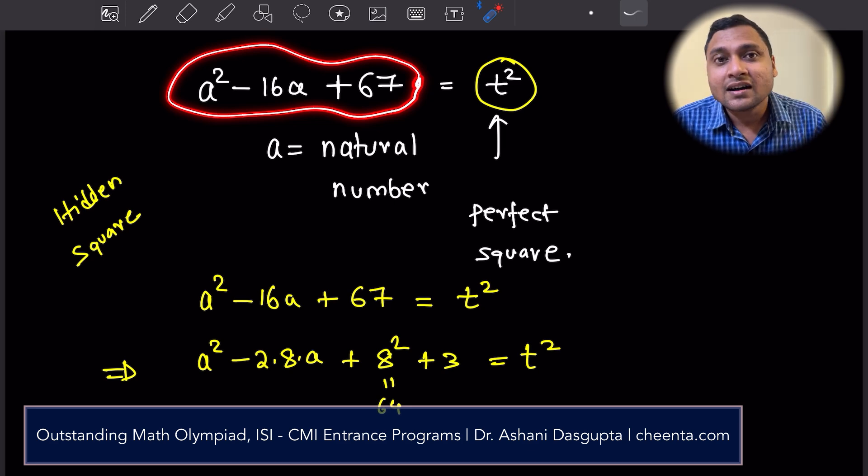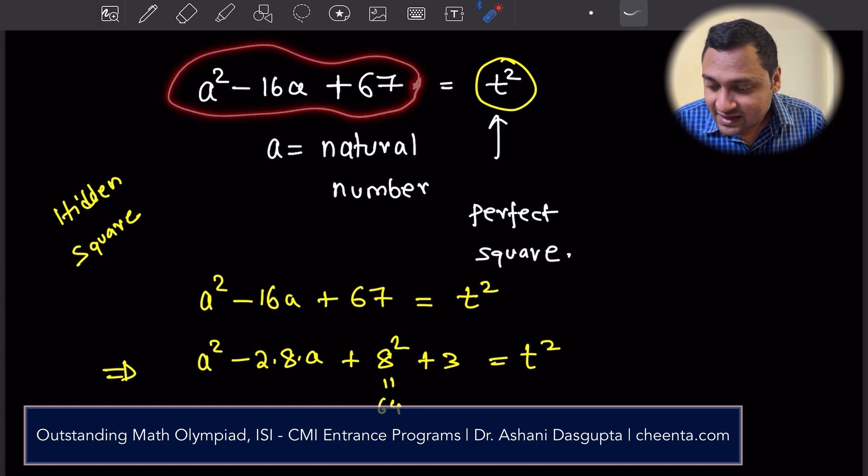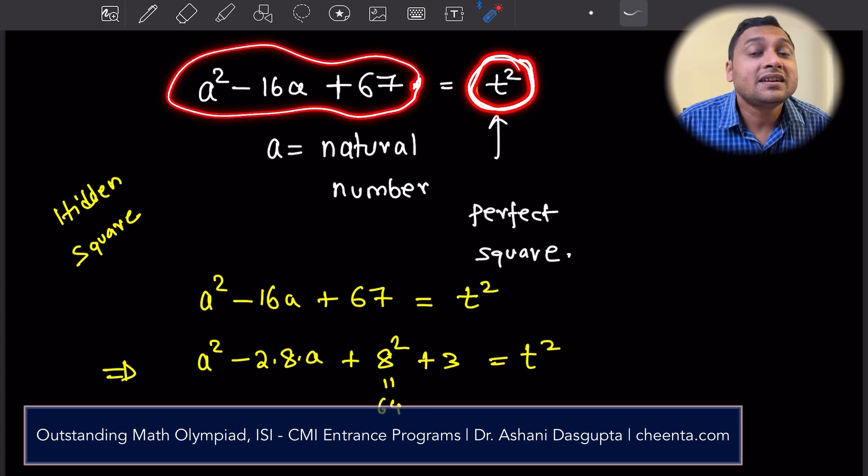One of the easiest way to write that down mathematically is to equate it to some t square. It's a very common strategy. You want to think about a perfect square? Symbolize it as t square.